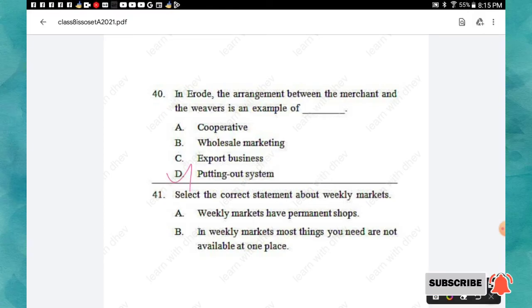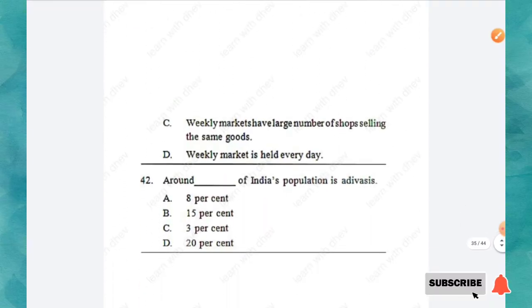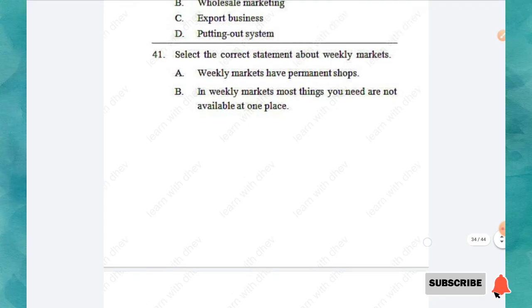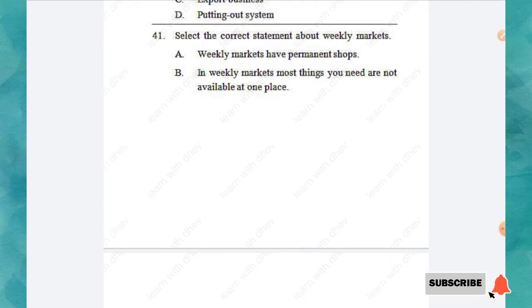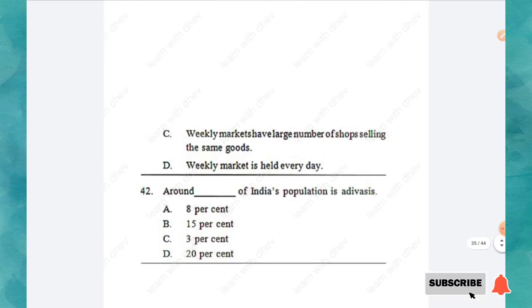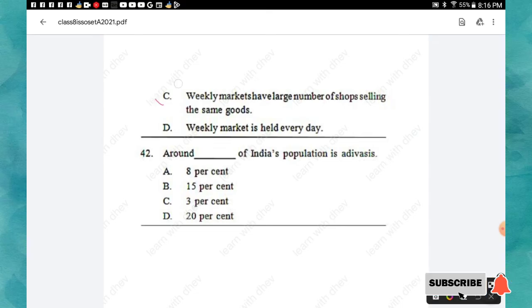Question 41: Select the correct statement about weekly markets. Option A: Weekly markets have permanent shops. Option B: Most things you need are not available at one place. Option D: A weekly market is held every day. The correct statement is option C: weekly markets have a large number of shops selling the same goods. Question 42: Around ___ of India's population is Adivasis. Options: 8%, 15%, 3%, 20%. The right answer is option A: 8 percent.